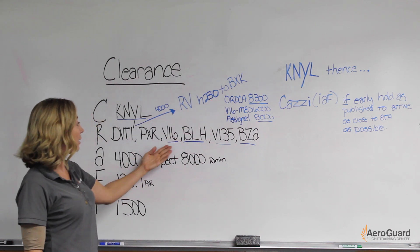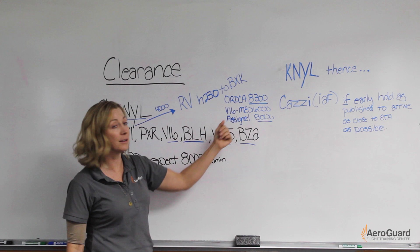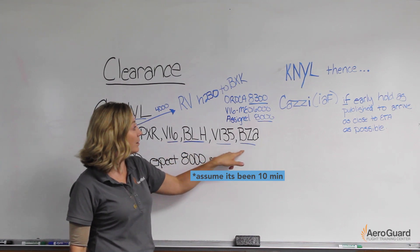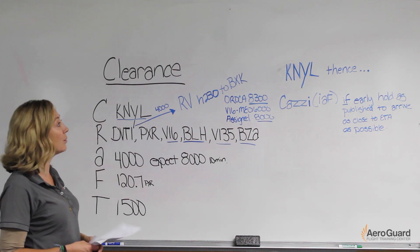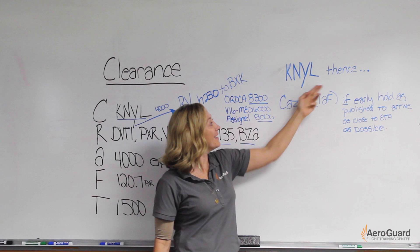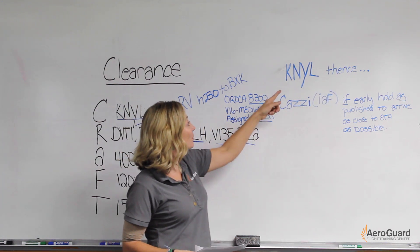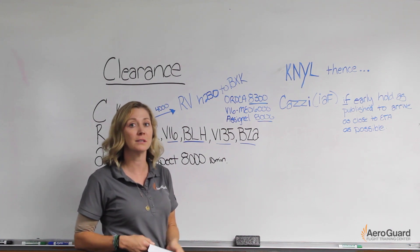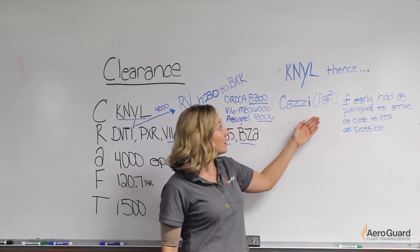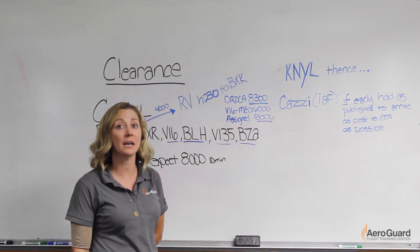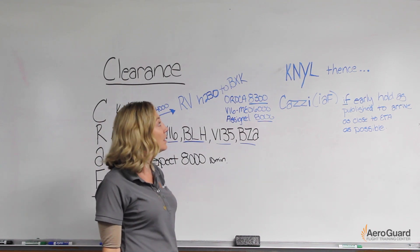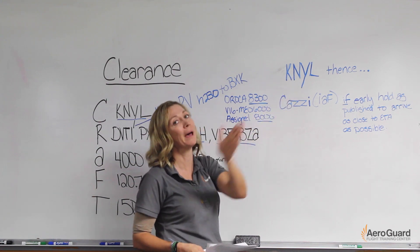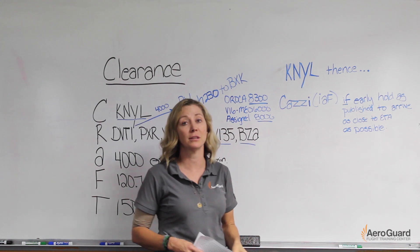Once you've reached Buckeye VOR and are on Victor 16, the MEA is 6,000 — but you were assigned 8,000, which is higher, so fly 8,000 feet along this route to your clearance limit at Yuma. Now at Yuma, proceed to CASI, the initial approach fix for the ILS into Yuma. Choose the ILS because it has the lowest weather minimums, giving you the best chance of landing. If you're early, hold as published to arrive as close as possible to your ETA or EFC. In this scenario there's no EFC, so hold until you can land. You'll likely shoot the approach from CASI as close to that time as possible.